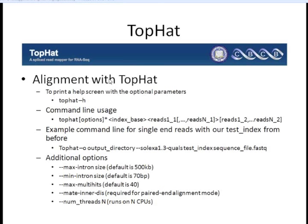Here are the command-line options for running TopHat. This is very similar to what we saw for Bowtie, but here we also give options about intron size. The default sizes are shown, and if your organism does not fall within these values, you'll want to specify what it should use. If you're using paired ends, you need to specify the predicted distance between the mate pairs. There's also an option to run on multiple threads, using multiple CPUs so it runs faster.